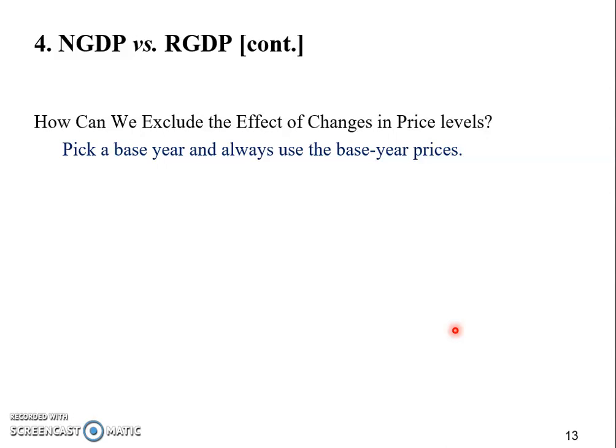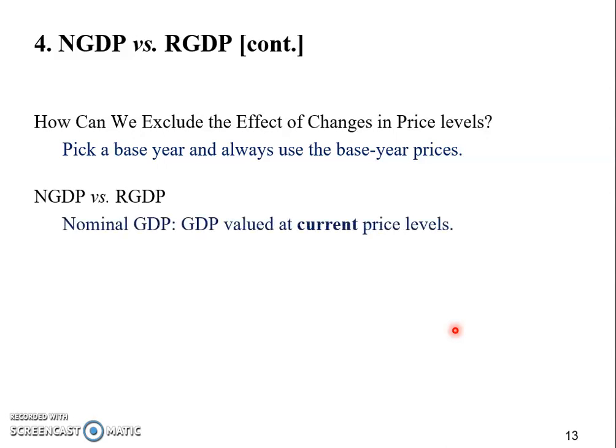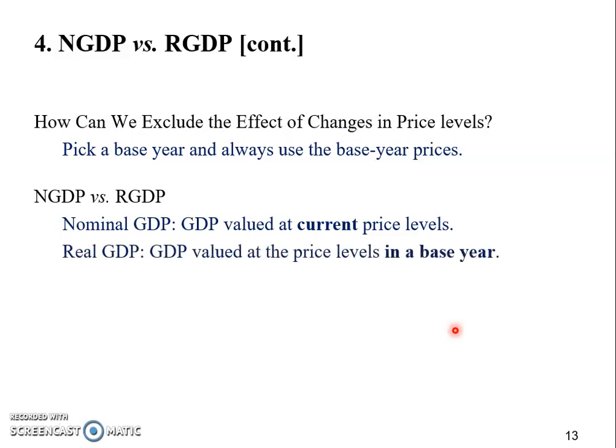With the base year in mind, we can talk about the definitions of nominal GDP and real GDP. Nominal GDP means GDP valued at the current price levels — current meaning the current year, so for 2019 we use 2019 price levels. Real GDP means GDP valued at the price levels in the base year.